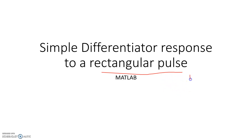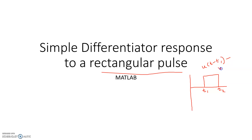So basically you might have already studied in your signals and systems course: suppose you have one rectangular pulse. Suppose this is T1 and this is T2. The expression of this is very simple from the basic concept of digital signal processing — we can say U(T - T1) minus U(T - T2) is the expression of this rectangular pulse. Here we are assuming that T2 is greater than T1, as is clear from the figure.